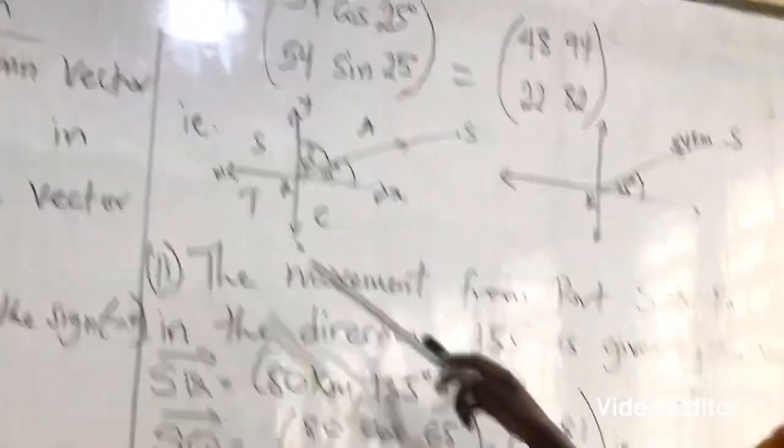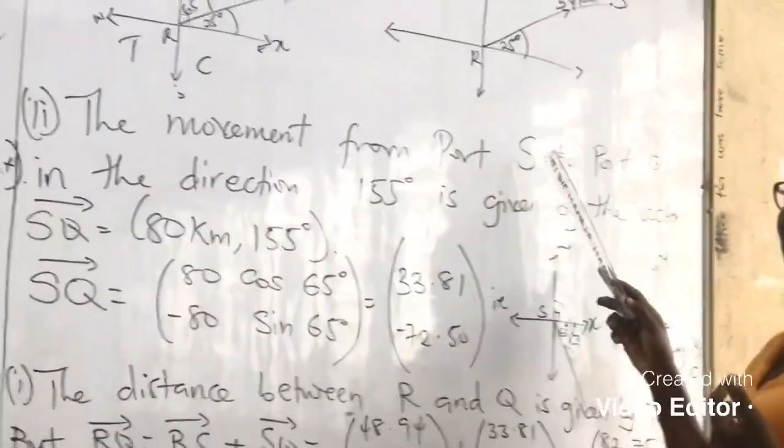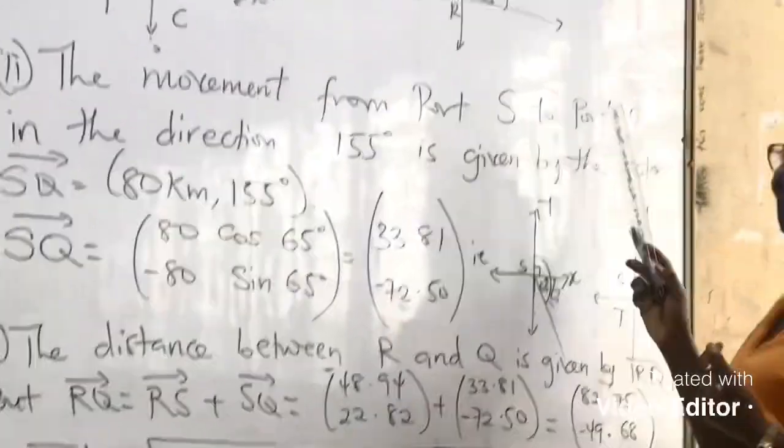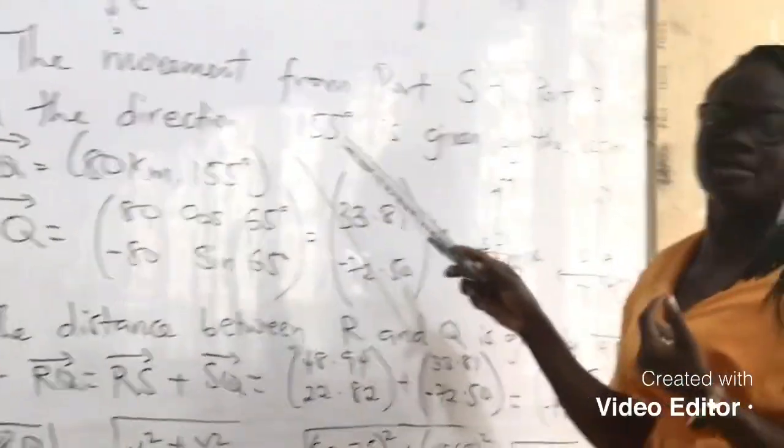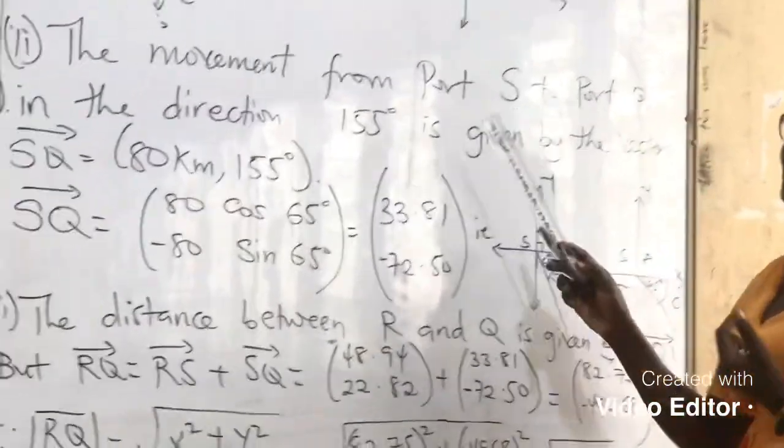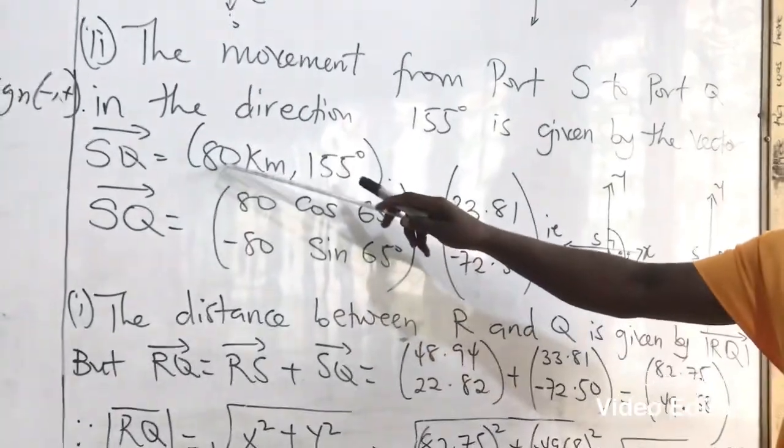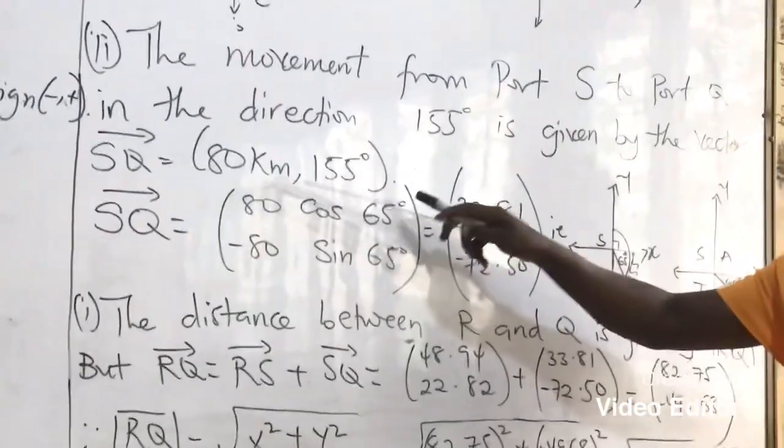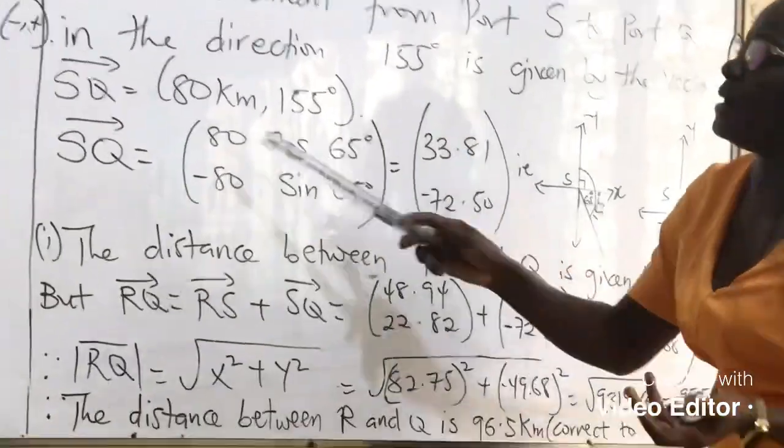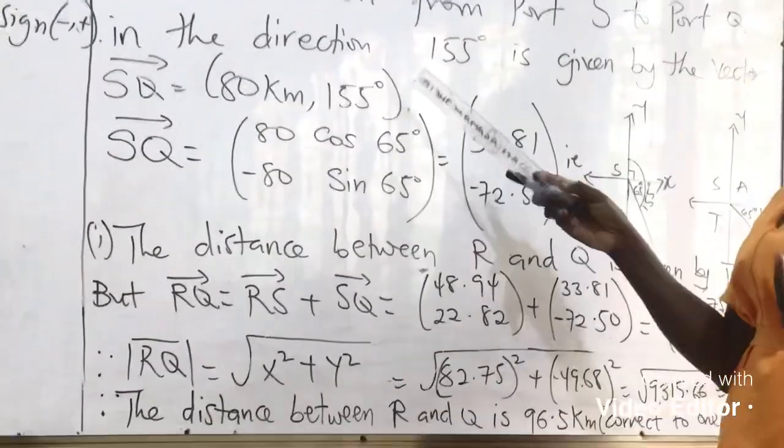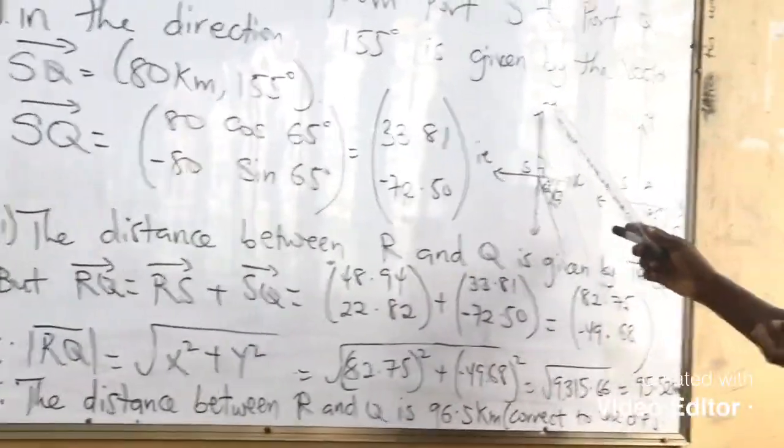Then the second one is the movement from Port S to Port Q in the direction of 155 degrees is given by the vector SQ as 80 kilometers and 155 degrees. How did we come about our angle here? We represented on a cardinal plane, 155 degrees.